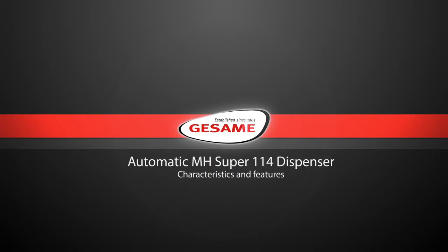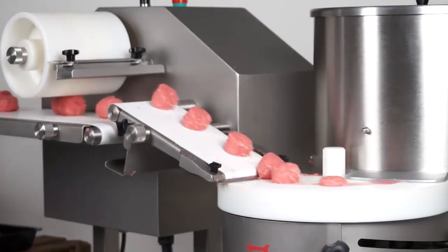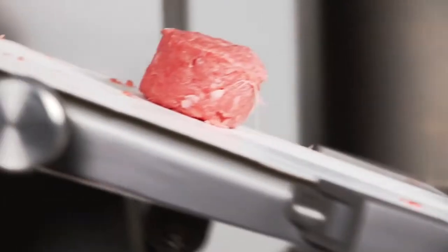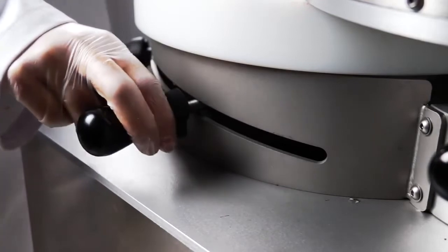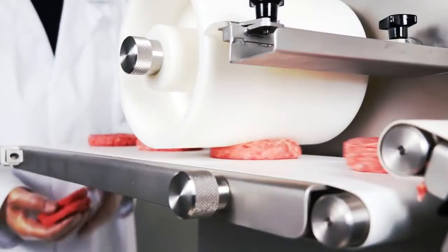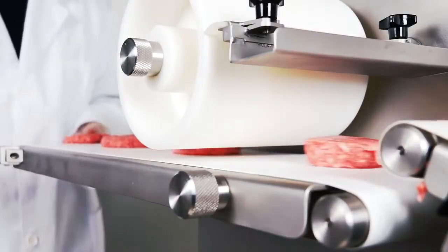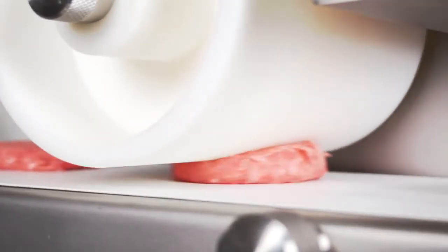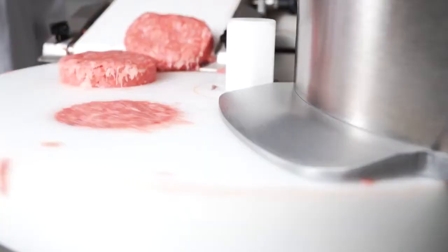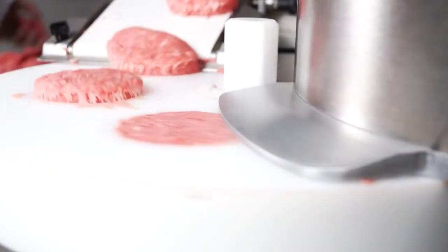Characteristics and features. The MH super 114 dispenser is very easy to operate thanks to its precise system of control of the portion and adjustment of thickness. It can make portions ranging from 1.37 inches to 4.14 inches in diameter with a maximum thickness of 1.3 inches and portions weighing from 1.23 ounces to 10.58 ounces.